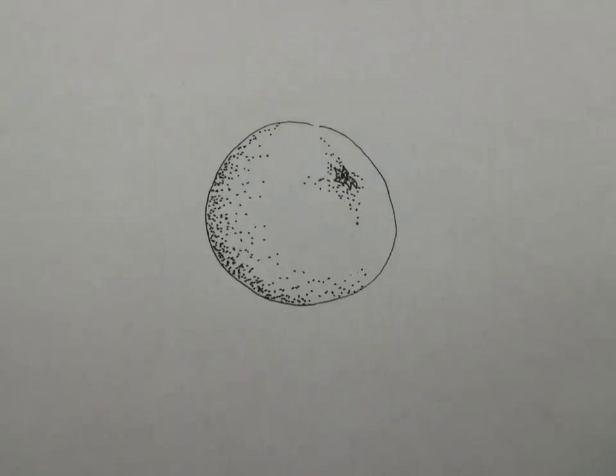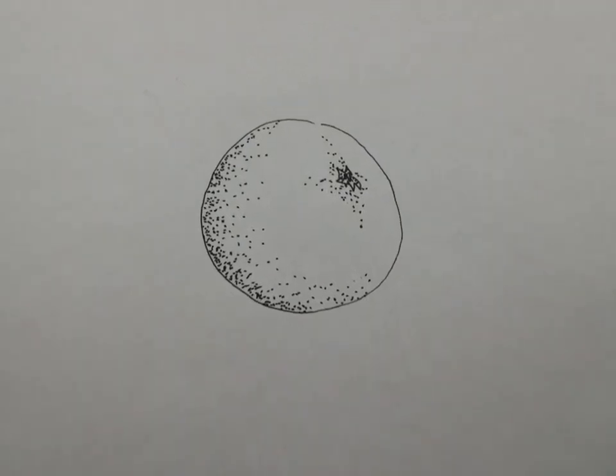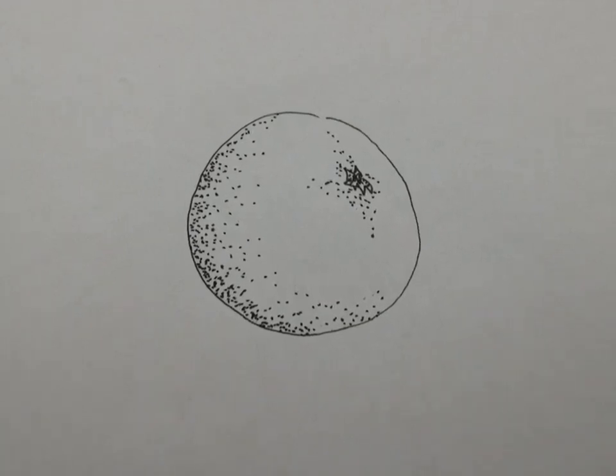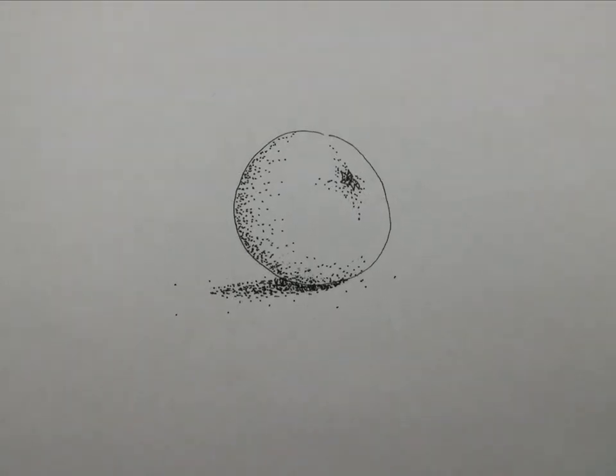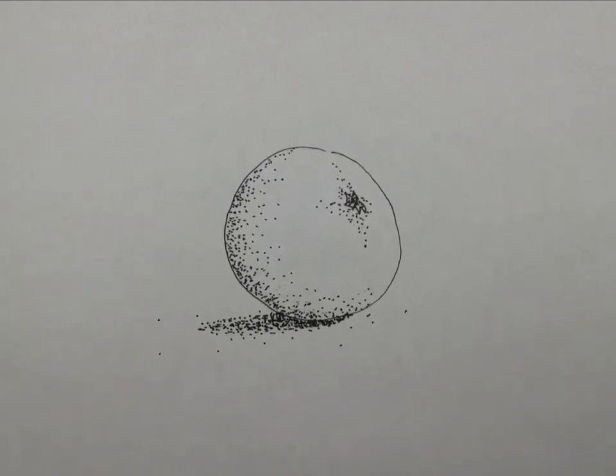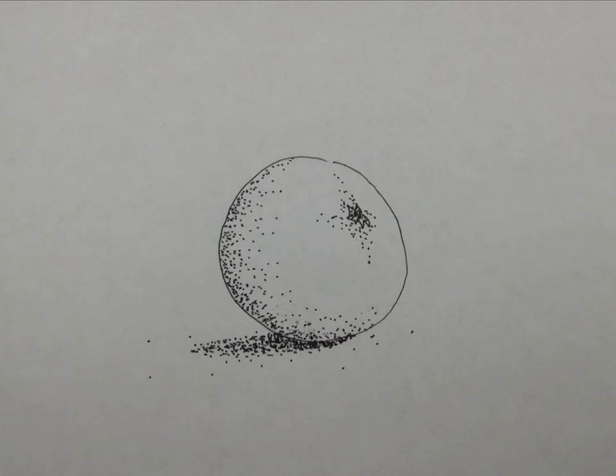And here I've really darkened up that edge on the left to make it appear to be a spherical shaped object. Now I've dropped the shadow by adding more stippling underneath to create a shadowing effect.